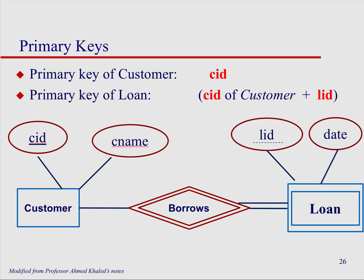Here's another example: customer borrows loan. A loan is very dependent on a customer, so we show this weak relationship with double diamonds. The customer has a customer ID as its primary key, and the loan has a partial key, the loan ID. These will later be combined into a composite primary key connected back to the customer.